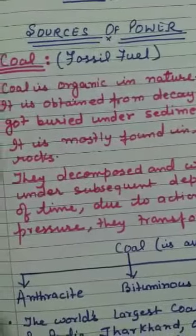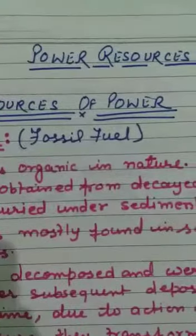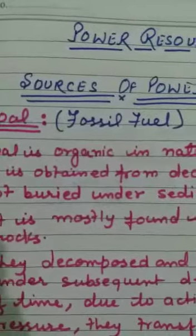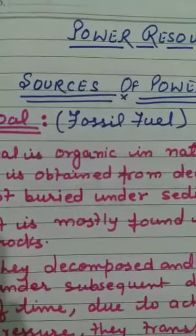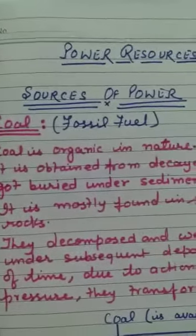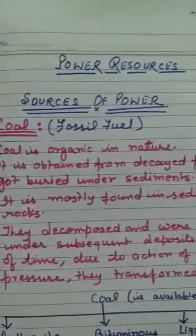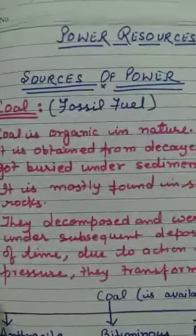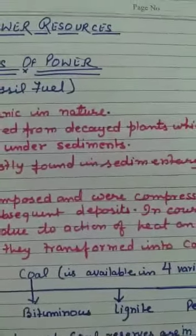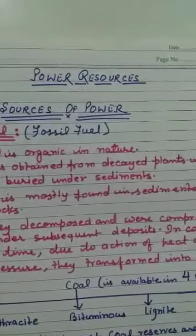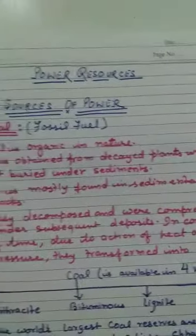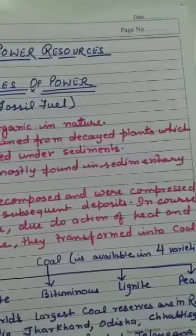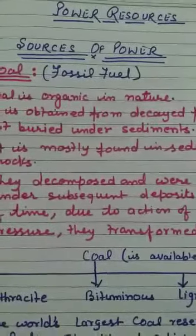I have written a few points regarding coal — listen carefully. Coal is organic in nature, meaning it is made up of living matter. It is formed from decayed plants that got buried under sediments. Coal is mostly found in sedimentary rocks. The plants decomposed and were compressed under subsequent deposits over time. Due to the action of heat and pressure, they transformed into coal.